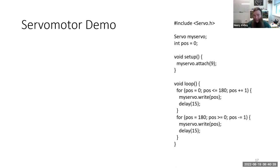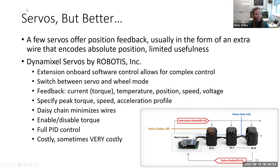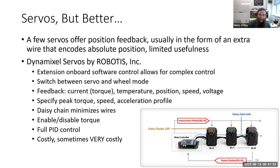I want to briefly mention another option: Dynamixel servos from Robotis Incorporated. These are the ones I've been using most recently in my snake robots. Imagine these as servo motors with an entire Arduino already packed inside — really complex control built into every servo. They can switch between servo motor mode and wheel mode, offer extended rotation beyond 360 degrees, and provide extensive feedback including current (which corresponds to torque), temperature, position, speed, and voltage. You can also specify peak torque, peak speed, and acceleration profile in software.